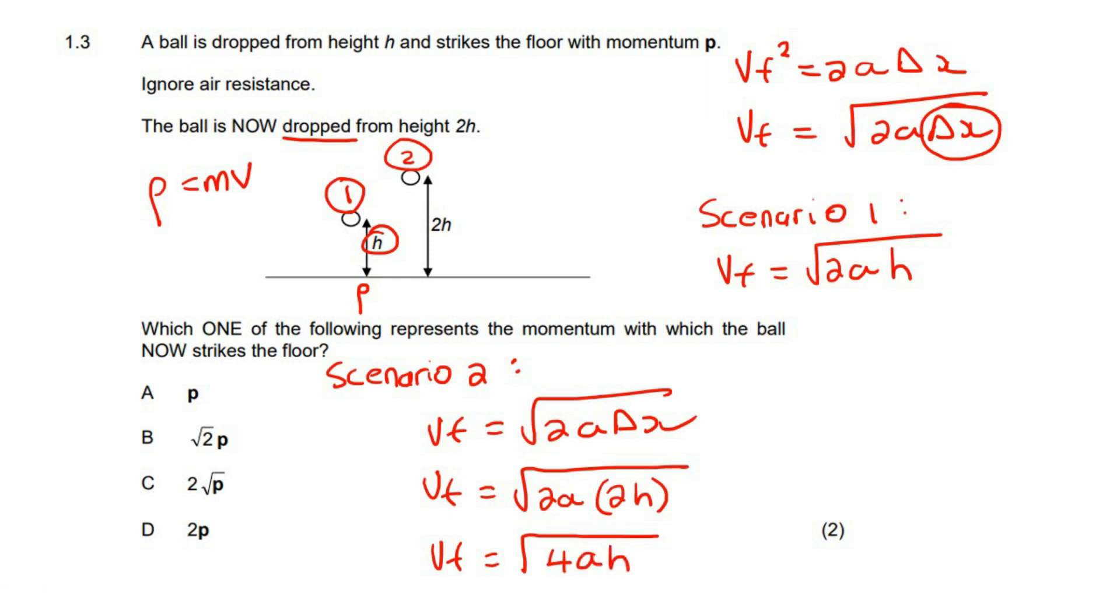So in scenario one, if we had to work out the momentum, it would be mv, so that would end up being m times that. In scenario two, your momentum, so this is for scenario two, this is scenario one, your velocity would be square root 4ah.